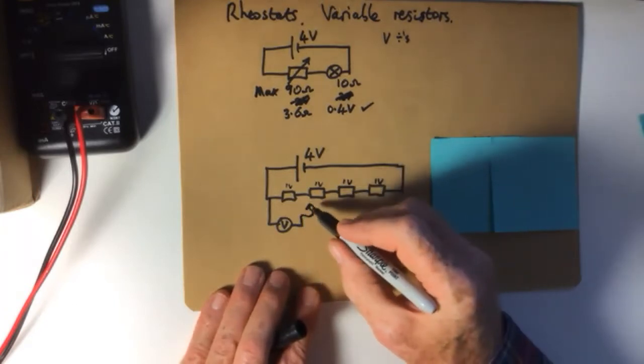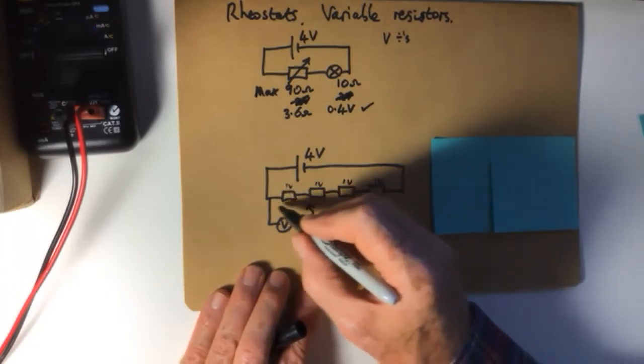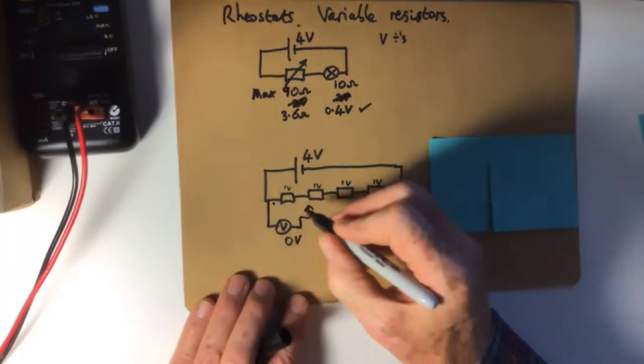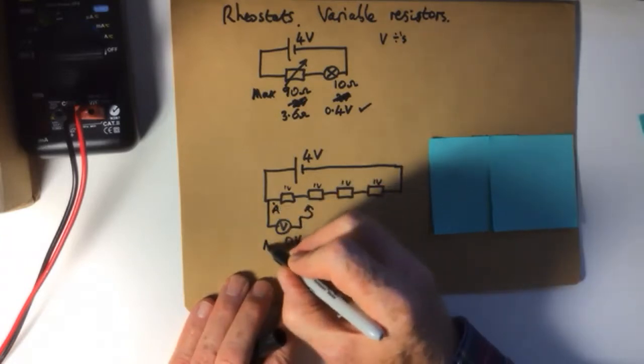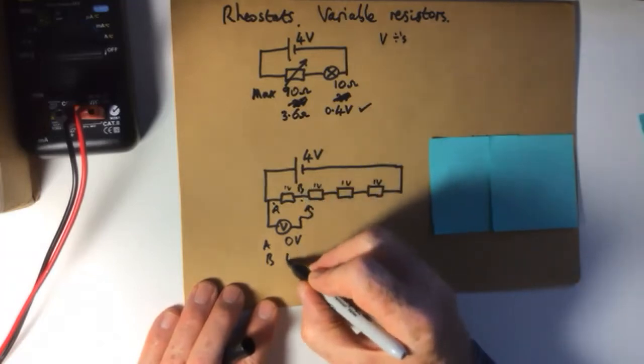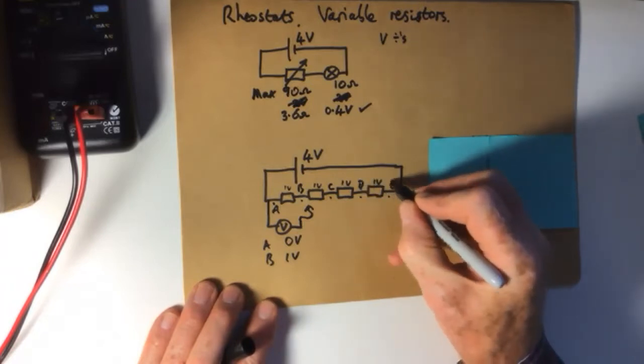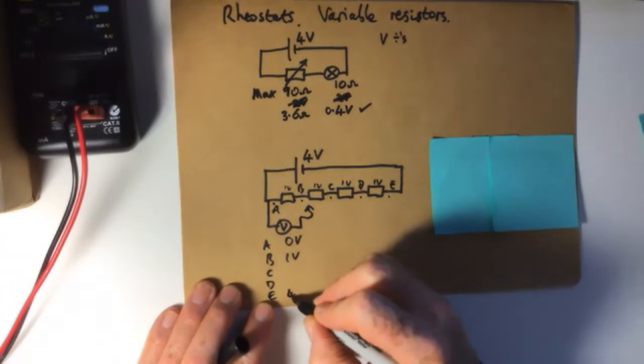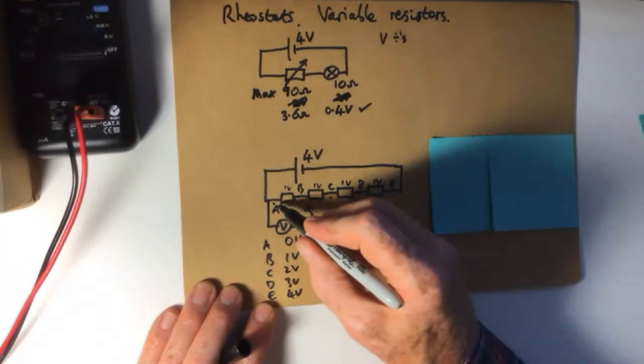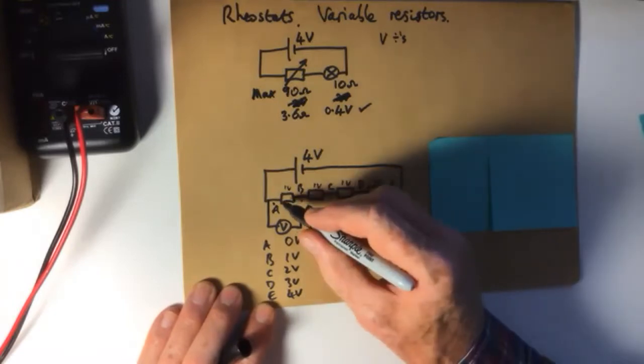So we can move this connection around, and depending where we move it to, because it's in parallel with this, we could move it from here. It would start at zero volts. That's important. So at point A, it would be at zero volts. At B, there, it would be one volt. C, D, E, four, three, two. Depending where we put it, we could go from zero right up to the maximum. We can never get to zero with this one. Here, we can go to zero.